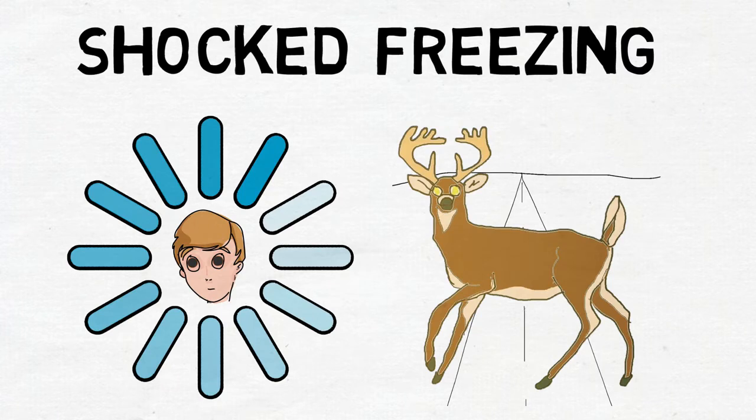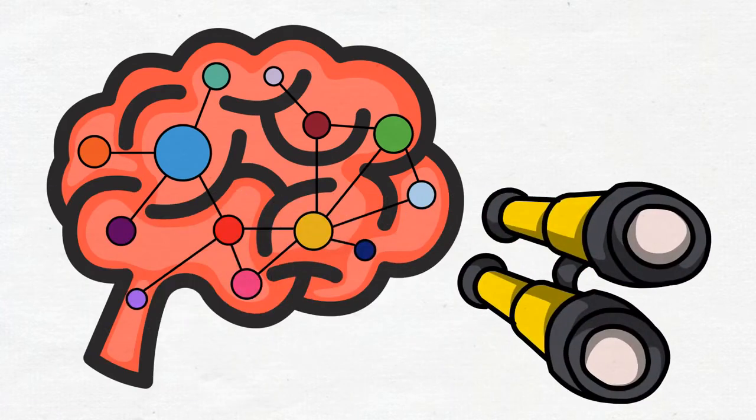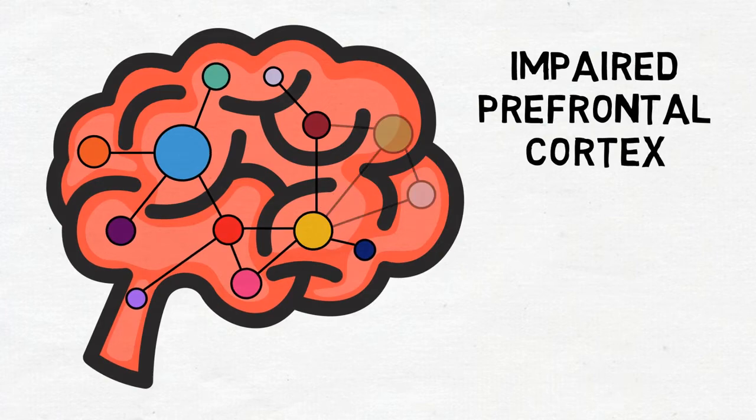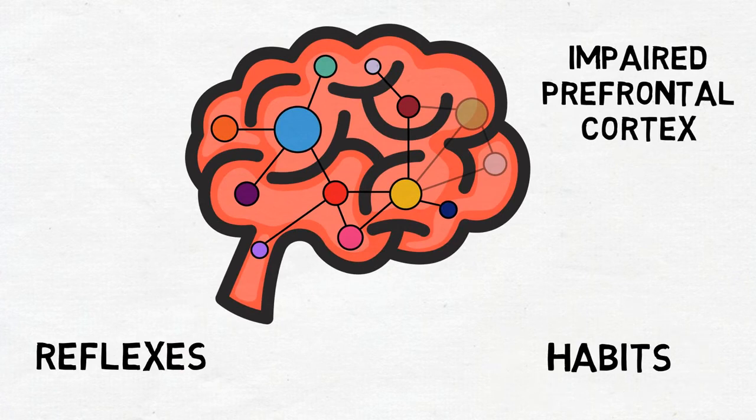The third type of freezing is no good choices freezing. To understand no good choices freezing, we must know this: when the brain's defense circuitry detects an attack, it quickly impairs the prefrontal cortex. That's the rational part of the brain, and the defense circuitry impairs it because, compared to reflexes and habits, reasoning is much too slow.